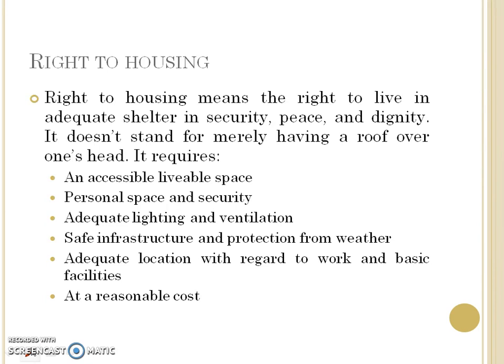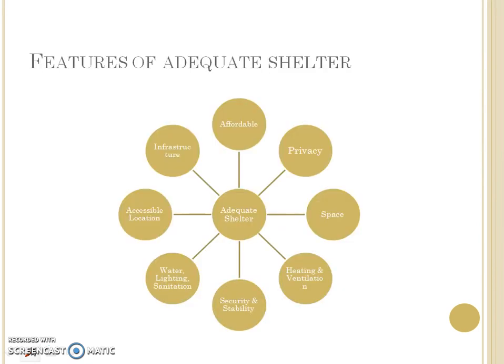Other basic amenities should be available in the nearby surroundings and it should be at a reasonable cost. To summarize from the previous slide, adequate shelter should be affordable, with privacy, space, heating, ventilation, security and stability, water, lighting, and sanitation facilities, and an accessible location.